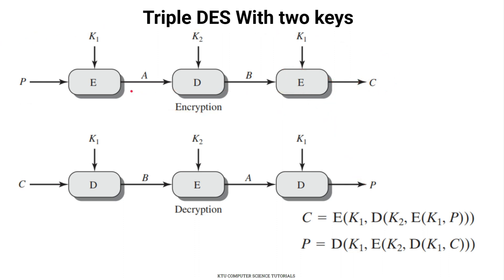The corresponding decryption process works in reverse: the input is ciphertext. We decrypt using K1 to get B. Then we encrypt B using K2 to get A. Then we decrypt A using K1 to get the original plaintext P. This is the decryption process for Triple DES with 2 keys.